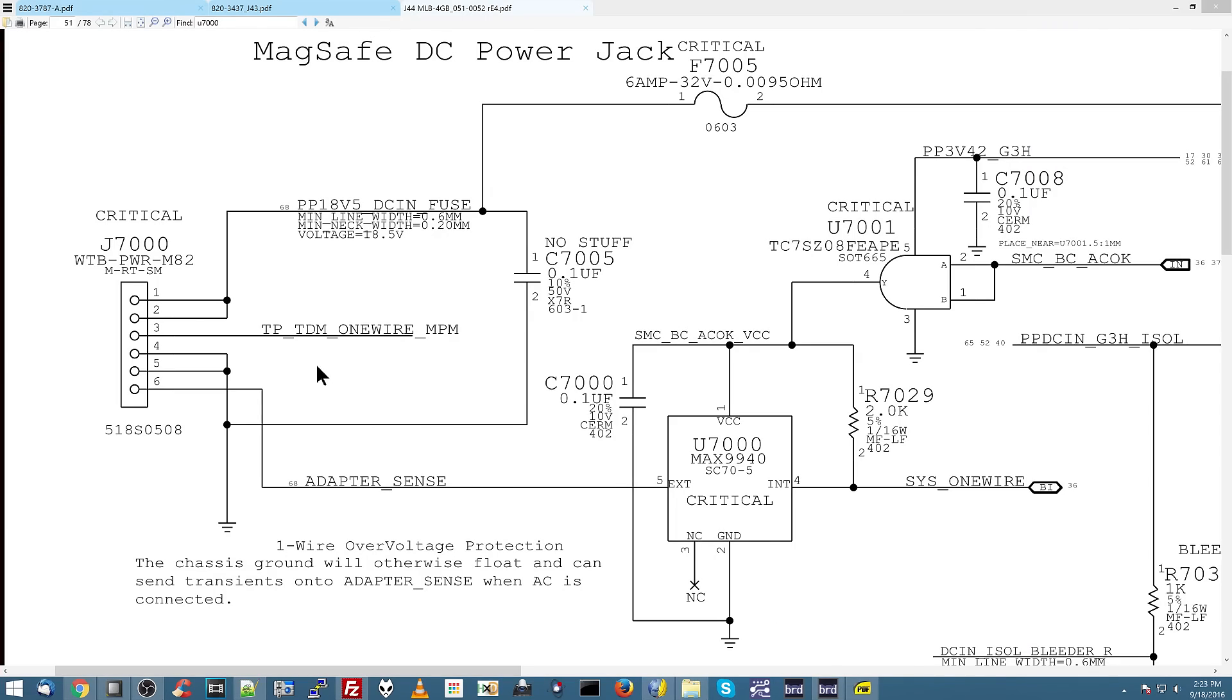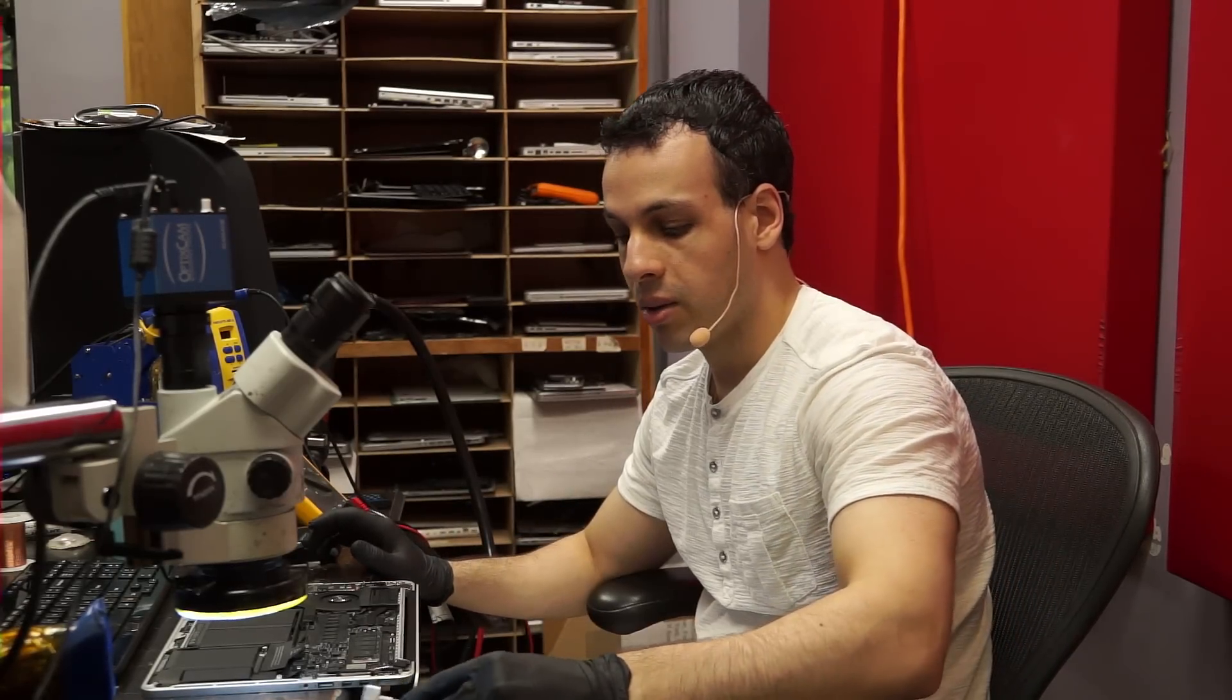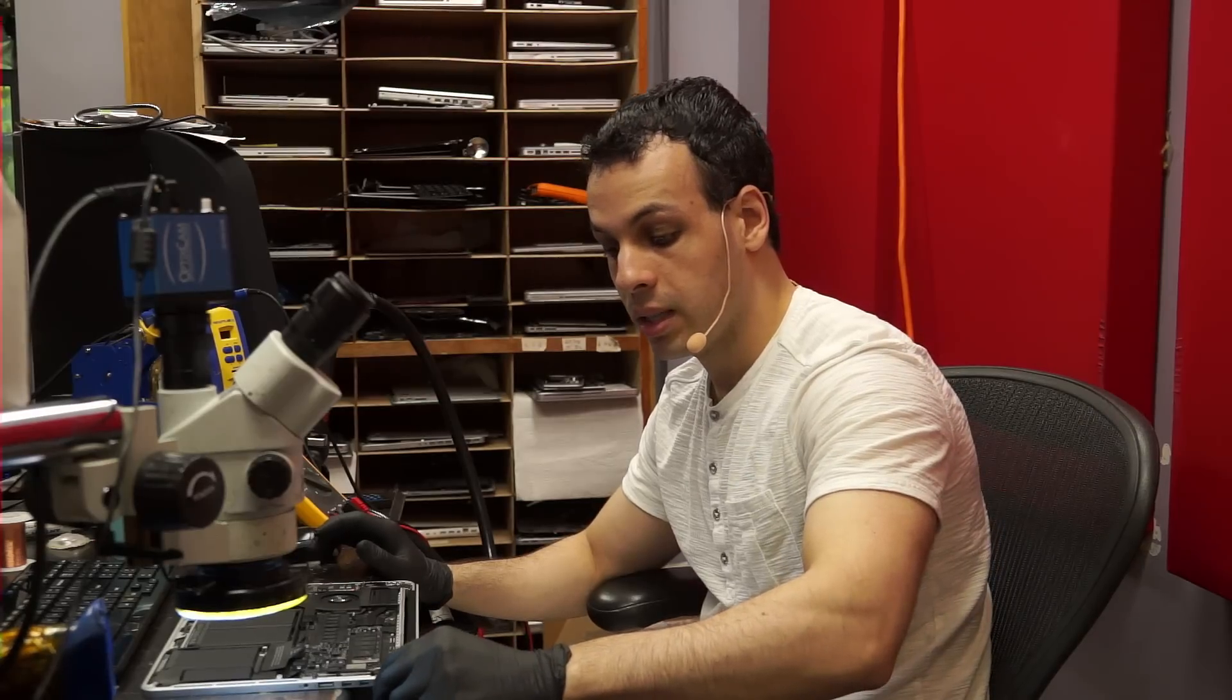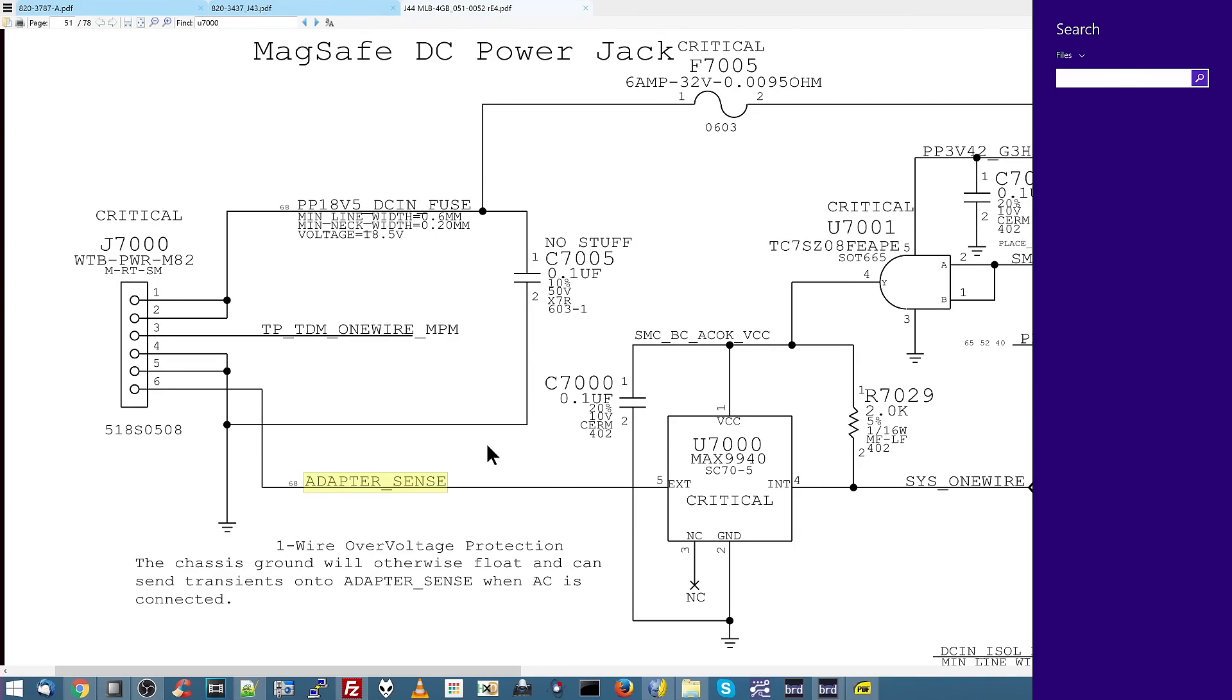Over here, you have 18 volts power, ground, which is needed for a circuit, and then you have adapter sense. Now, what do you think is going to be responsible for that little light turning on? This light turns on when it senses a computer. It's not on right now, but when I plug it in, I expect it to turn green because it has sensed the computer. So, this is required for the light to turn on.